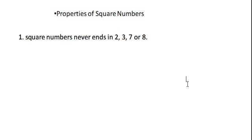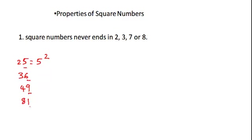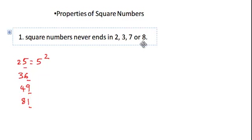Let us discuss some properties of square numbers. First, a square number never ends with 2, 3, 7, or 8. For example, 25, 36, 49, and 81 have unit digits of 5, 6, 9, and 1 respectively. This clearly states that 2, 3, 7, and 8 can never be the unit digit of a perfect square.